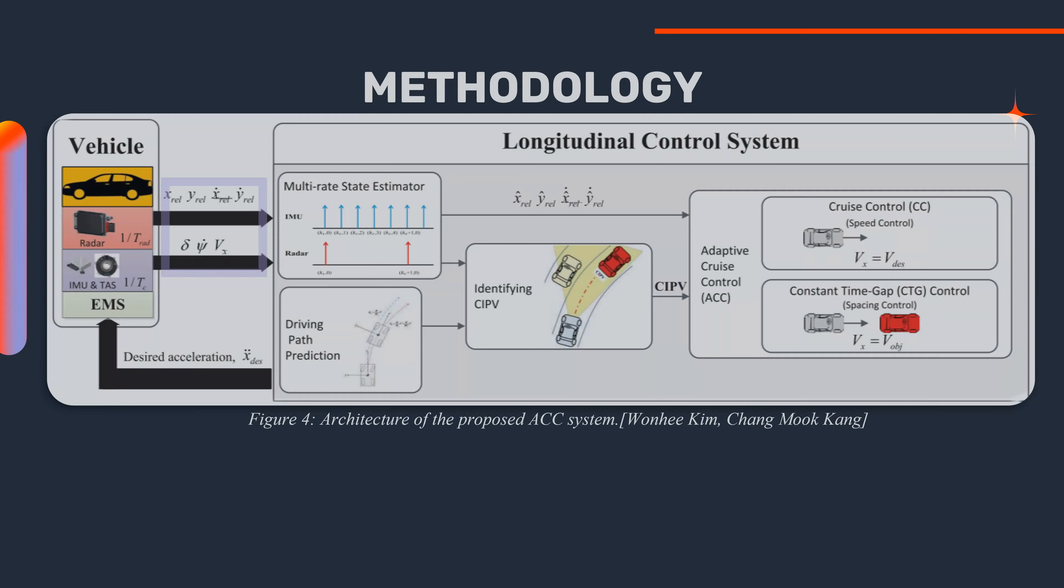This figure shows the main architecture of the ACC system. The radar measures the relative longitudinal and lateral position, velocity, and acceleration at slow sampling rates. On the other hand, the IMU measures the steering wheel angle, yaw rate, and longitudinal velocity at faster sampling rates. The slower sampling rate of the radar compared to the IMU can lead to inaccurate control and undesirable longitudinal behavior.